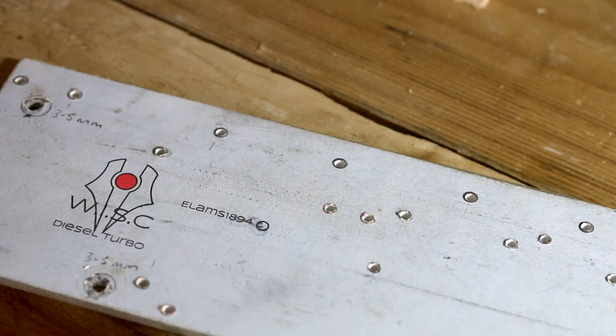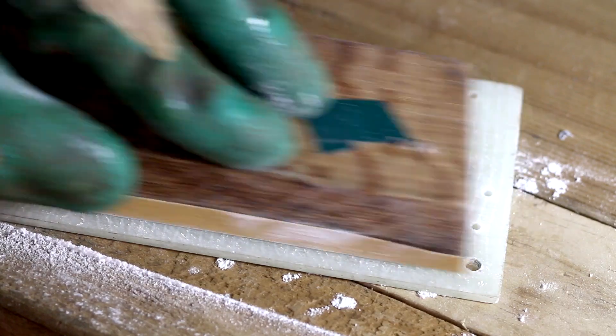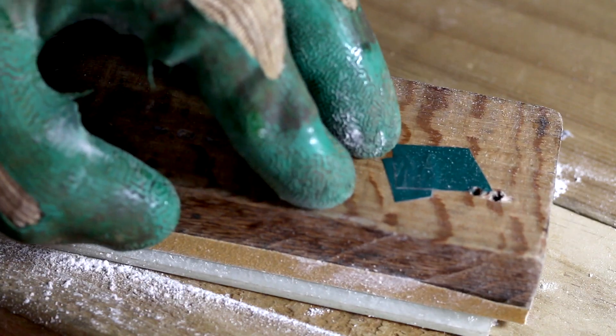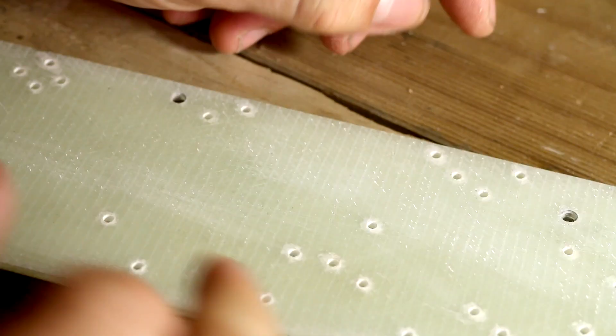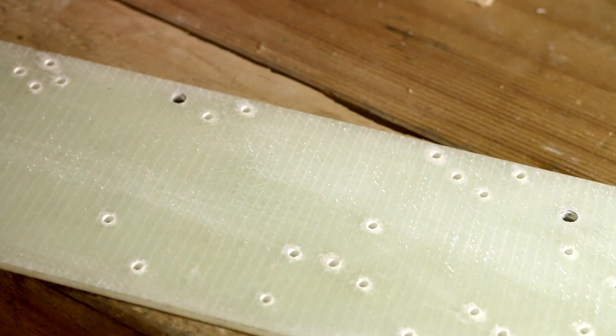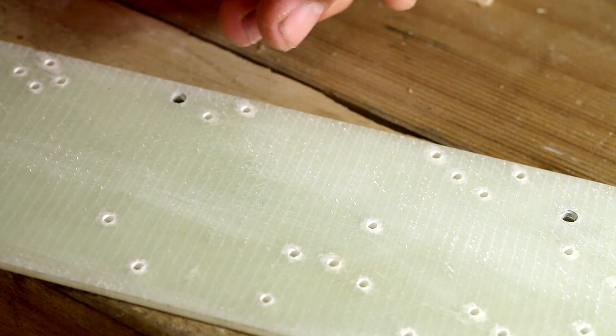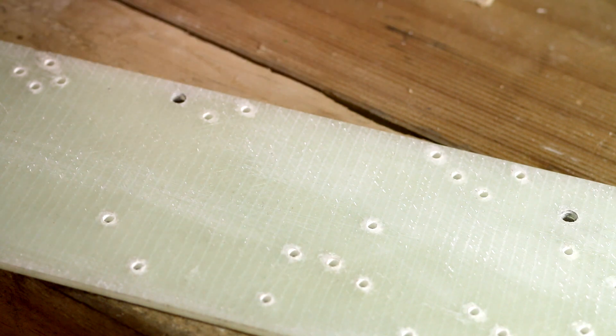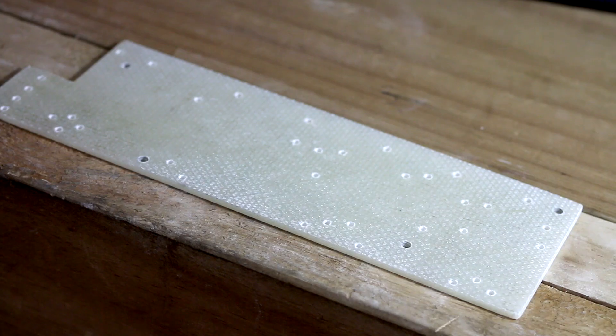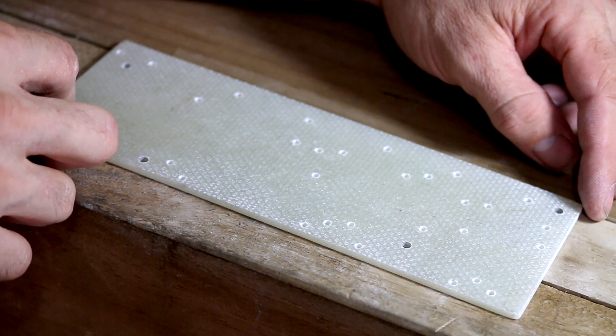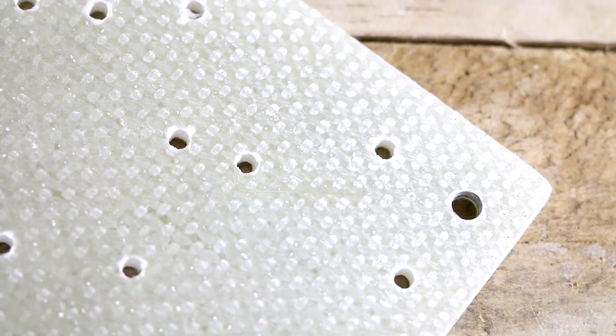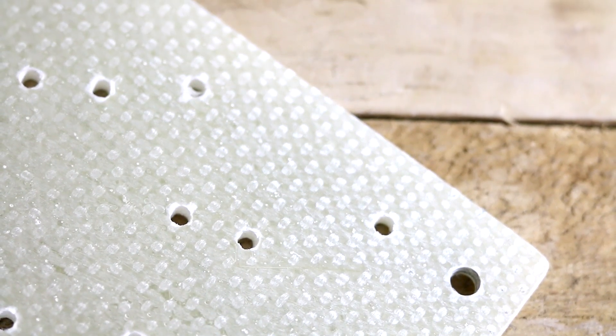Once you've drilled all your holes, you can go ahead and take this paper off. I use heavy sandpaper or you can use a scraper. I like to just take this down to a nice matte finish. I just don't like shininess, but it's completely personal preference.